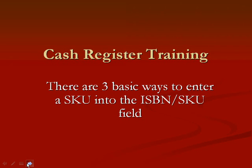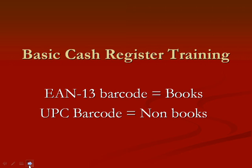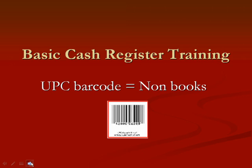There are three basic ways to enter a SKU into the ISBN SKU field. One of them is to scan the barcode. For books, you want to look for the EAN 13 barcode. Not everyone knows what an EAN 13 is, so we're going to take a closer look at that. You would also find a UPC barcode for non-books. The EAN 13 — what makes it an EAN 13 is right here: you'll notice there's a 978. All EAN 13 barcodes begin with a 978 or a 979. What you're seeing now on the screen is a UPC barcode for non-books, and you probably recognize that — it's pretty straightforward.